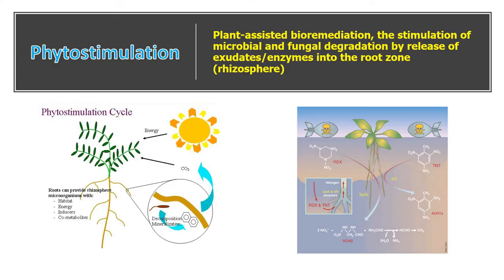Phytostimulation is plant-assisted bioremediation — the stimulation of microbial or fungal degradation through the release of exudates and enzymes into the root zone. In the rhizosphere, bacteria or fungi release enzymes that degrade pollutants, and this enzymatic activity from the microbial population can be employed to reduce soil toxicity.